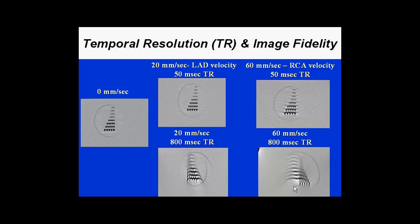These are examples of resolution phantoms at different velocities. On the far left, this resolution phantom has smaller and smaller holes, and we can resolve nearly all of them very nicely — this is without motion. The next panel shows the phantom moving at approximately 20 millimeters per second, which is roughly the peak velocity of the left main and proximal left anterior descending during cardiac imaging. At a 50-millisecond temporal resolution, you can still resolve each of these individual characteristics very nicely. However, at 800 milliseconds — typical of four-slice cardiac CT scanners — there is considerable motion blur.